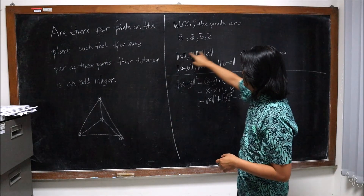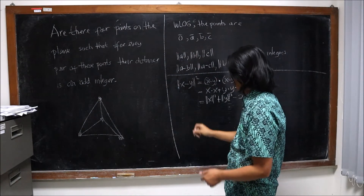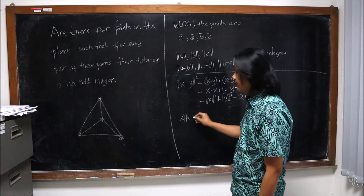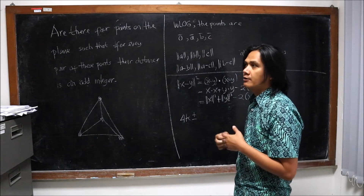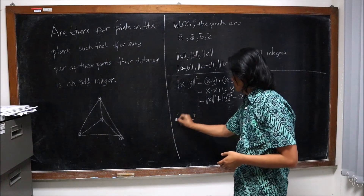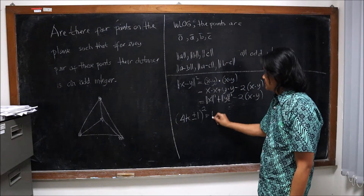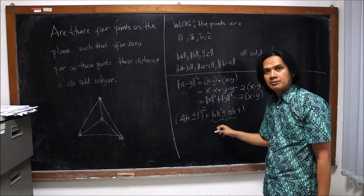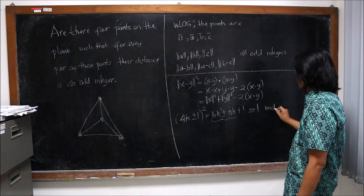Notice that by assumption all of these lengths are odd integers. If we have an odd integer, it is of the form 4k ± 1. So when we square an odd integer, we get 16k² ± 8k + 1, and the first two terms are divisible by 8. Therefore, all odd integers squared are congruent to 1 mod 8.